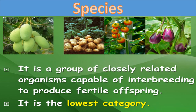Now let's start with the hierarchical order of categories. First is species. Species is a group of closely related organisms — organisms that resemble each other morphologically as well as in their internal structures, and which are capable of interbreeding to produce fertile offspring. Such a group of organisms is called a species, and it is the lowest category in the hierarchical order.